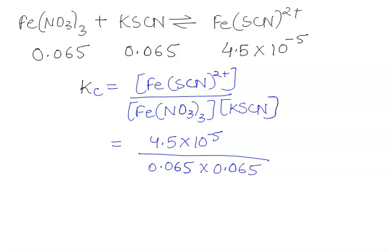Now this gives us our answer as KC equals 0.0106, and this is the value for the equilibrium constant for iron thiocyanate.